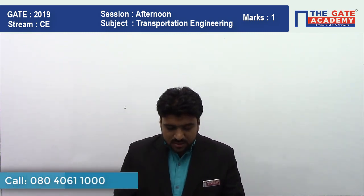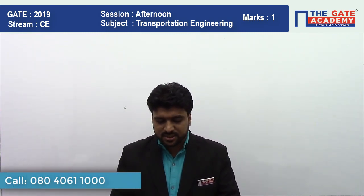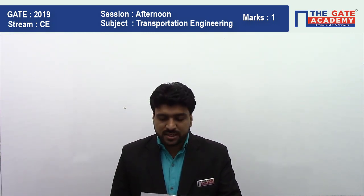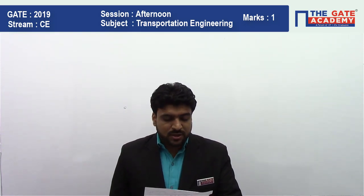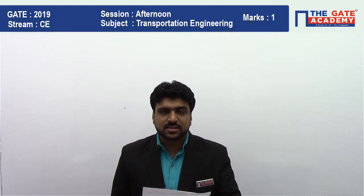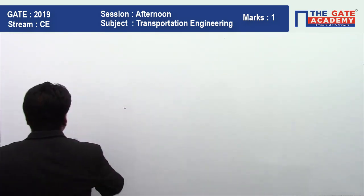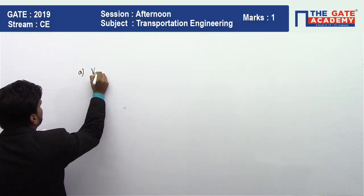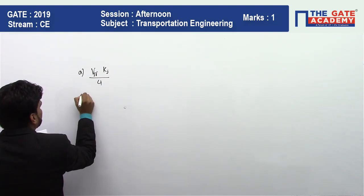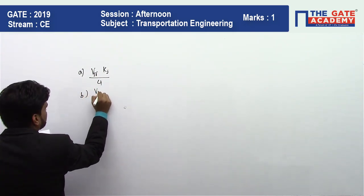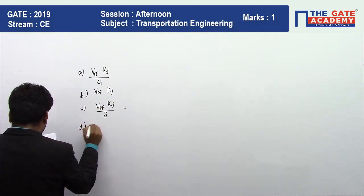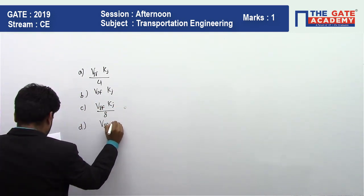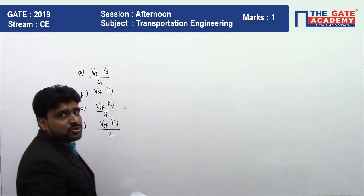The first question: the speed-density relationship in a block section of a highway follows the Greenshields model. Free flow speed is Usf and jam density is kg. What is the maximum flow observed on this section? Four options are given: (A) Usf × kg / 4, (B) Usf × kg, (C) Usf × kg / 8, and (D) Usf × kg / 2. It is a very easy question.